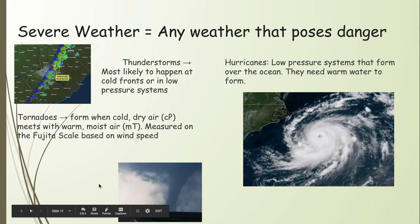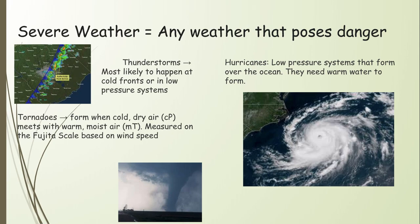We measure tornadoes on the Fujita scale, which is based on wind speed — the greater the wind speed, the higher the rating on the scale. Most tornadoes are F0 to F1, with winds between about 80 and 120 miles per hour. F5 tornadoes have winds in excess of 200 miles per hour — possibly up to 300 miles per hour.